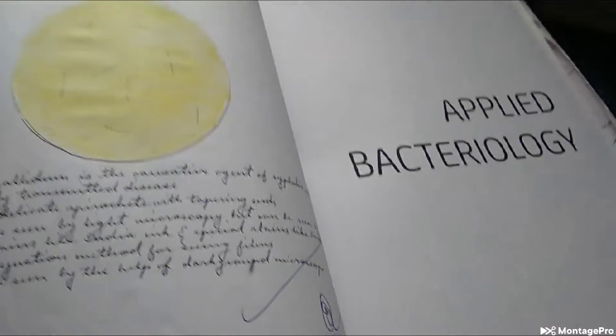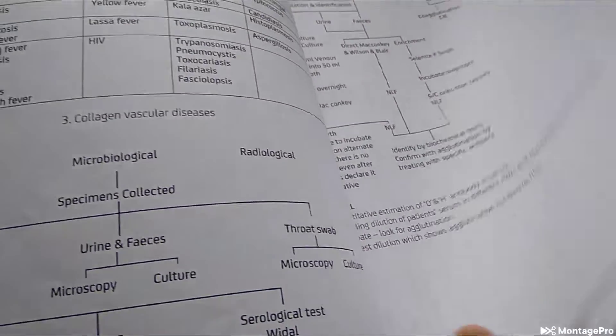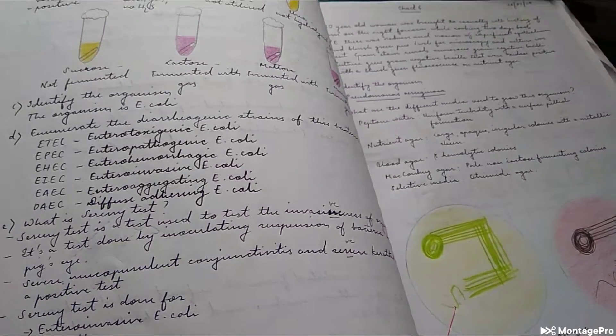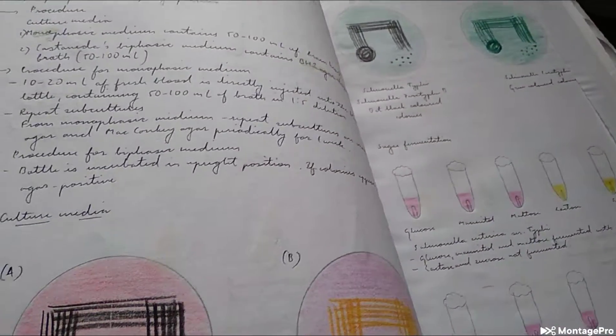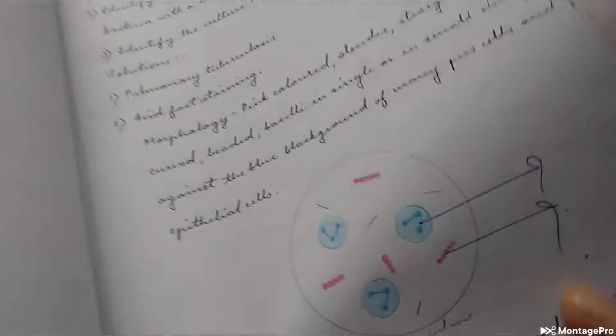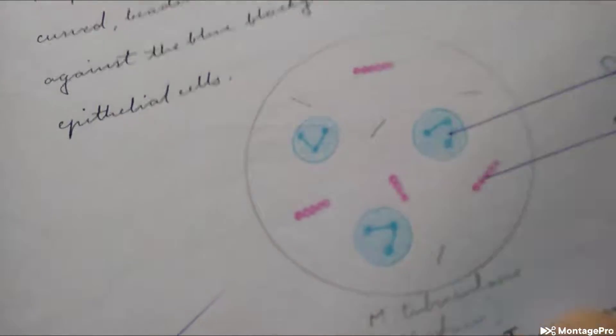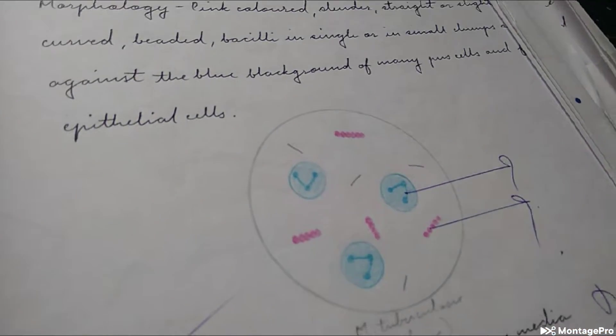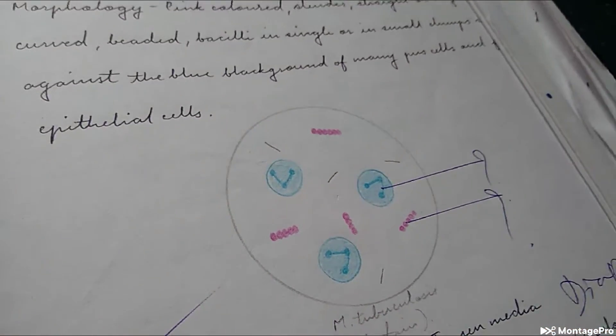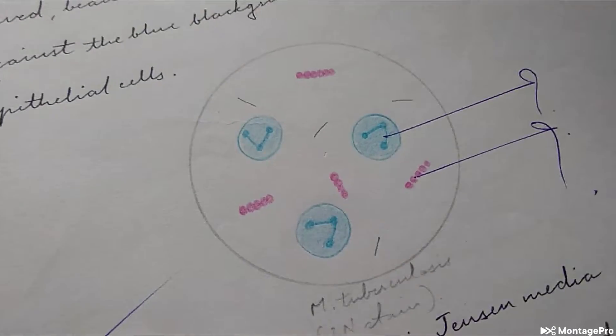Just scan through this record because it doesn't look very neatly written. You should write good in your record, write neatly. This is very important - what is this? Tuberculosis, Ziehl-Neelsen stain, very good. You can see beaded bacilli, they didn't label this diagram so they have marked a question mark.